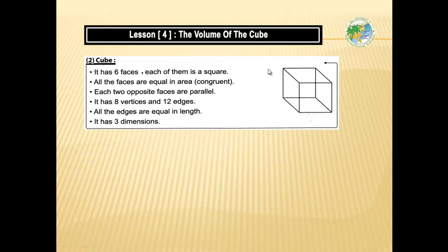This solid is called a cube. It has 6 faces, each of them is square. All the faces are equal in area and congruent. Each two opposite faces are parallel. It has 8 vertices and 12 edges. All the edges are equal in length. It has 3 dimensions.